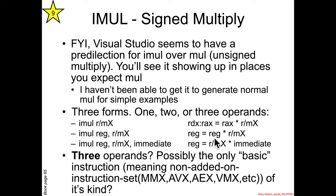The two and three operand forms behave more as you would expect. For instance, one takes a register, multiplies it by another, and stores it back. Another takes a register/memory location, multiplies it by an immediate, and stores the result. Notably, the three-operand form is seemingly unique among basic assembly instructions — it's the only one I know of that takes three operands.